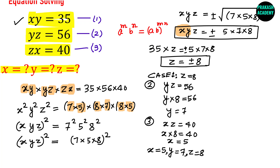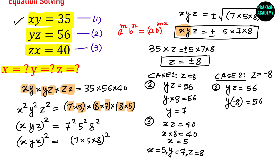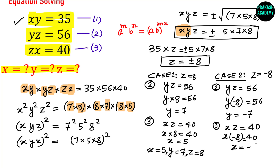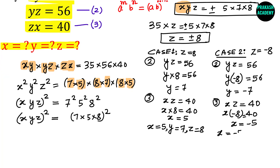Case 2: Z = −8. From equation 2, YZ = 56 with Z = −8 gives Y = −7. From equation 3, XZ = 40 with Z = −8 gives X = −5. So the solution for case 2 is X = −5, Y = −7, Z = −8.